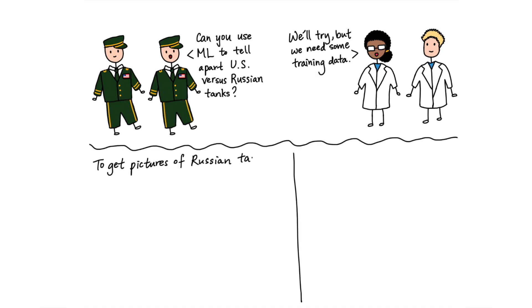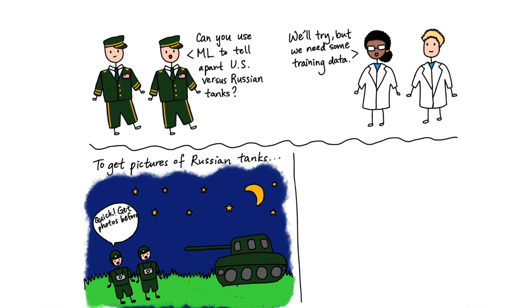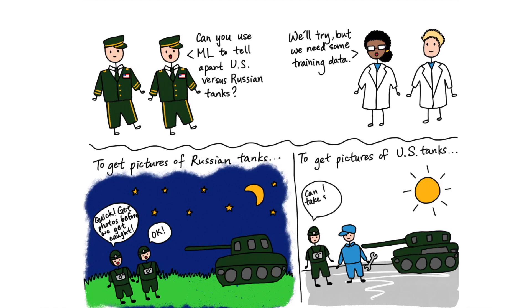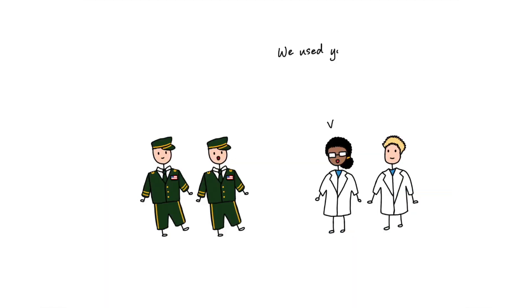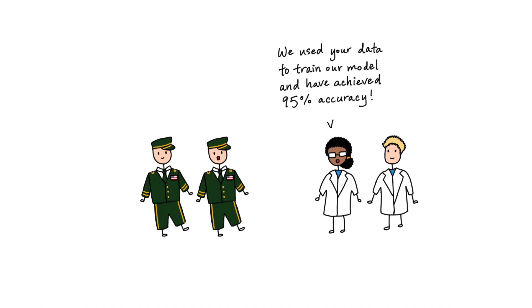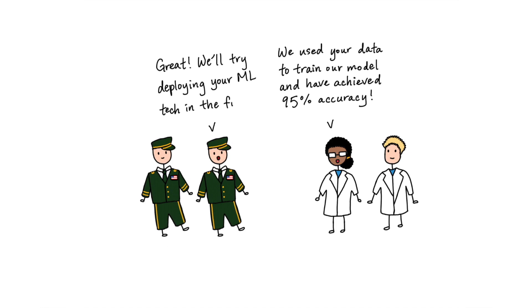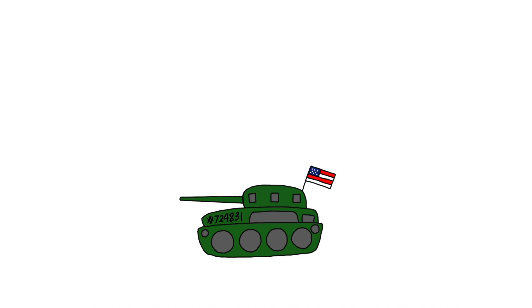For their training data, they had people go into Russian territory under the cover of night and take lots of pictures of Russian tanks, and they were able to get pictures of American tanks pretty easily. The researchers fed these two classes of photos as training data into their machine learning algorithm. After many weeks of training, since back then computers were very slow, the researchers were happy to report that their algorithm was able to differentiate American tanks from Russian tanks with over 95% accuracy. However, when the algorithm was actually deployed in the field, it completely failed.